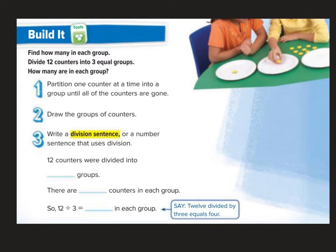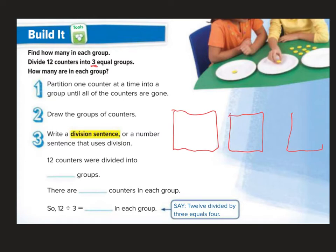If I'm going to partition one counter at a time into a group until all the counters are gone, I have 3 equal groups. So if I wanted to draw this out, I could draw 3 boxes. A circle will be my counters. I'll take 1, 2, 3 and keep counting until I get up to 12.